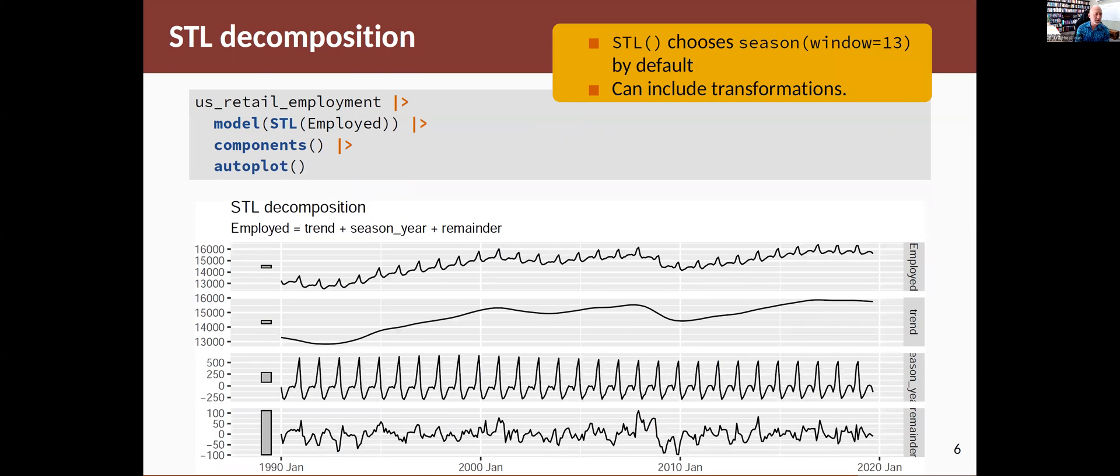Just in case you're wondering, what is it doing by default? So it's choosing 13 for the seasonal component. We've just found with experiments that that seems to be a reasonable number for a lot of data sets.